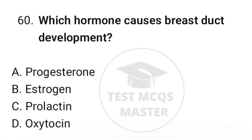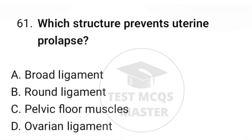Question number sixty: which hormone causes breast duct development? The correct option is B, estrogen. Question number sixty-one: which structure prevents uterine prolapse? The correct option is C, pelvic floor muscles.